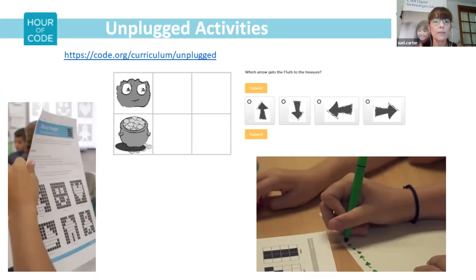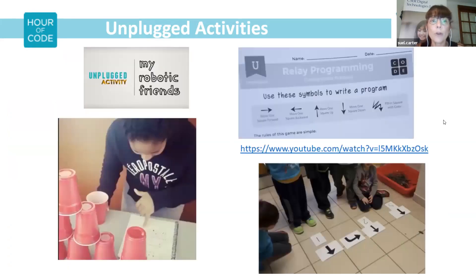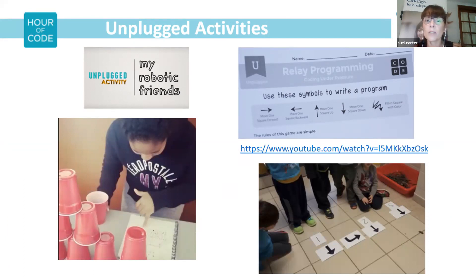There are also a number of unplugged activities — one is with graph paper on the code.org website where they have their curriculum. These ones are fun to do at lots of different levels, building in complexity for older students. One of the favourites I've known is My Robotic Friends, which seems to work across all age levels, where students are hands-on building stacks with cups using coding language with arrows for moving forwards, backwards, up, or down — and students can physically walk out the robot activity themselves.